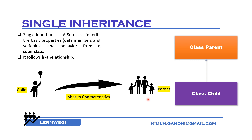In single inheritance, say I have blue eyes and I got them from my mother because my mother had blue eyes. What makes it single inheritance is that only two parties are involved — one child and one parent. There is one subclass, which is the child class, and one superclass, which is the parent class. The child inherits characteristics from its parent — that is called single inheritance.